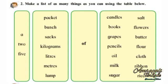Let's solve the next activity. Make a list of as many things as you can using the table given below. Pudhe dilela taktecha vapar karun tumhana shakya hotil tya vastu nchi yadi tayar kara. Pratama pan dilela taktecha til shabd vachuya. Pahile rakane madhil shabd A.